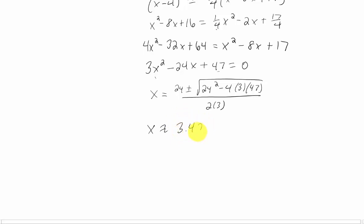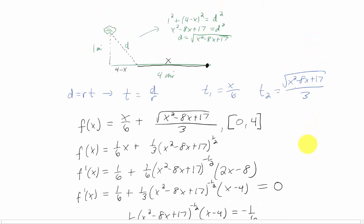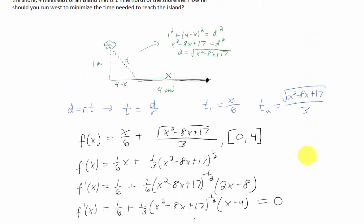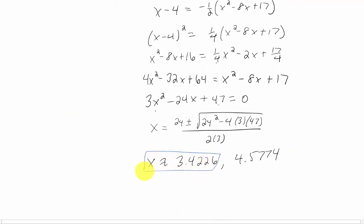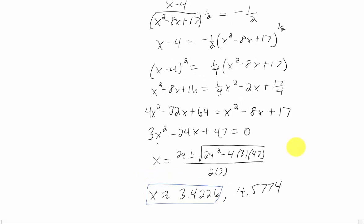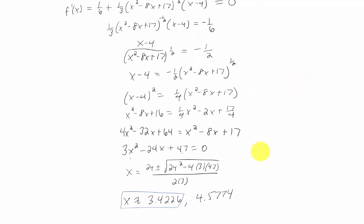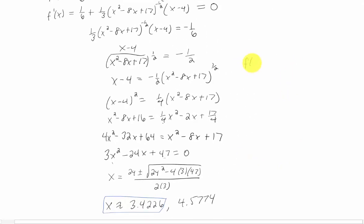Plugging into the quadratic formula and a calculator gives two answers: approximately 3.4226 and approximately 4.5774. The critical point that makes sense is about 3.4226 because it falls between 0 and 4, our interval. While this should give the minimum time, we should also test the endpoints f(0), f(3.4226), and f(4) to be sure.